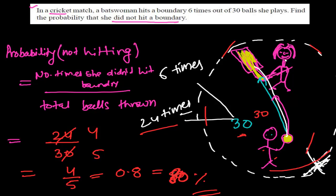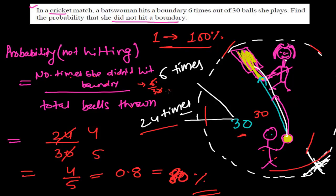And hitting the boundary is of course 100 minus 80, that is 20%, because the sum of all probabilities is always 1, or 100%. Now suppose the question was asking: what is the probability of hitting the boundary? Then it would be the number of times she hit the boundary — 6 times — divided by the total balls thrown — 30 times — which gives 6/30, meaning 1 upon 5, which is 20% or 0.2. I hope you understand this problem. In the next video we will do a slightly different probability problem. Bye bye.